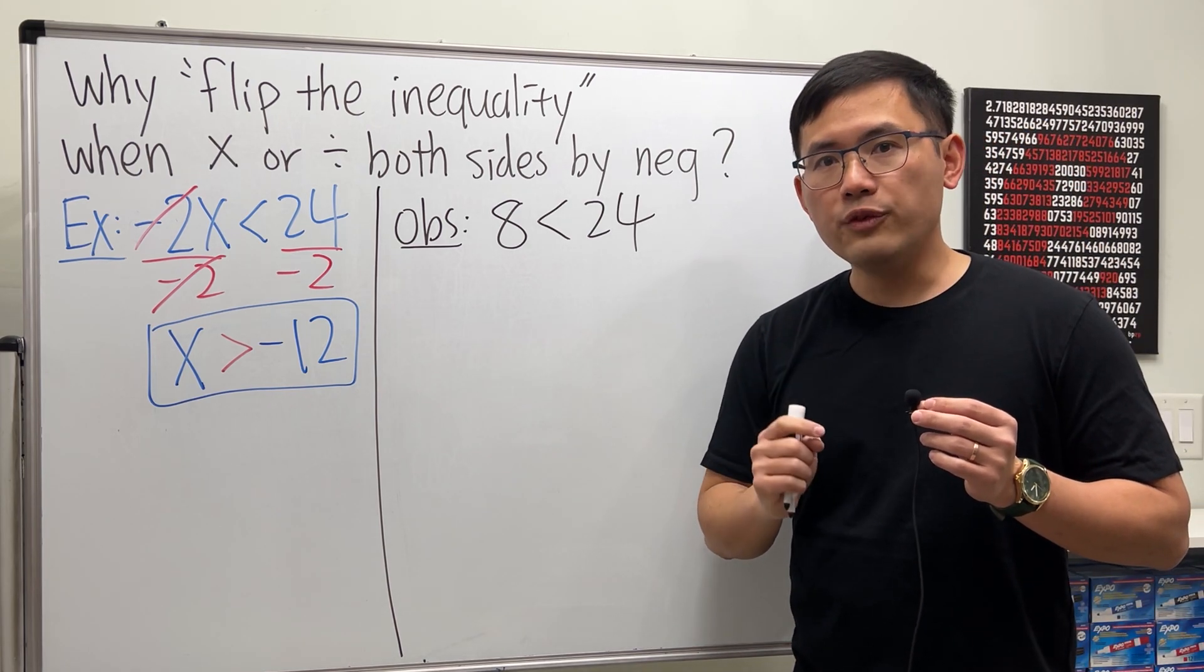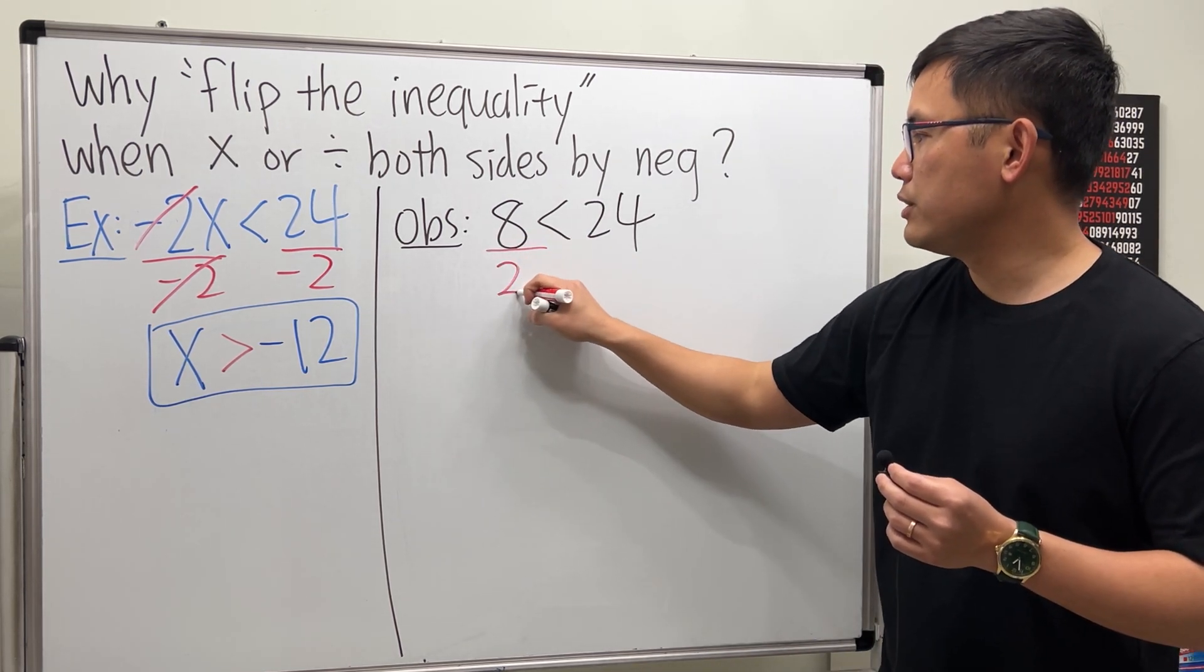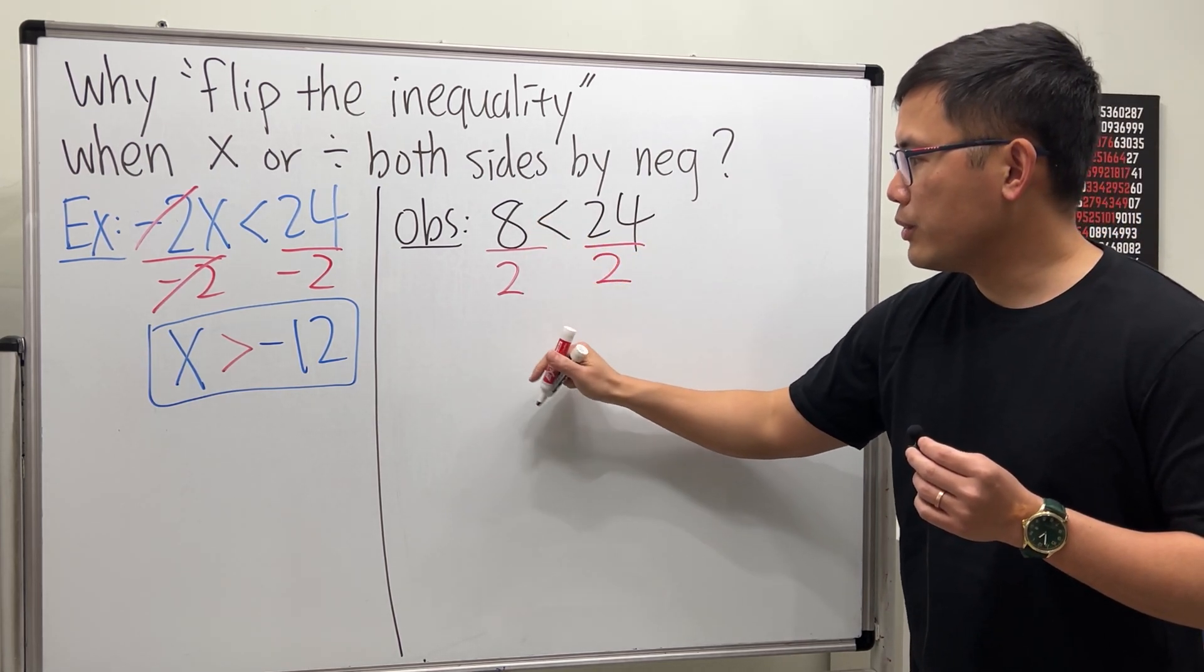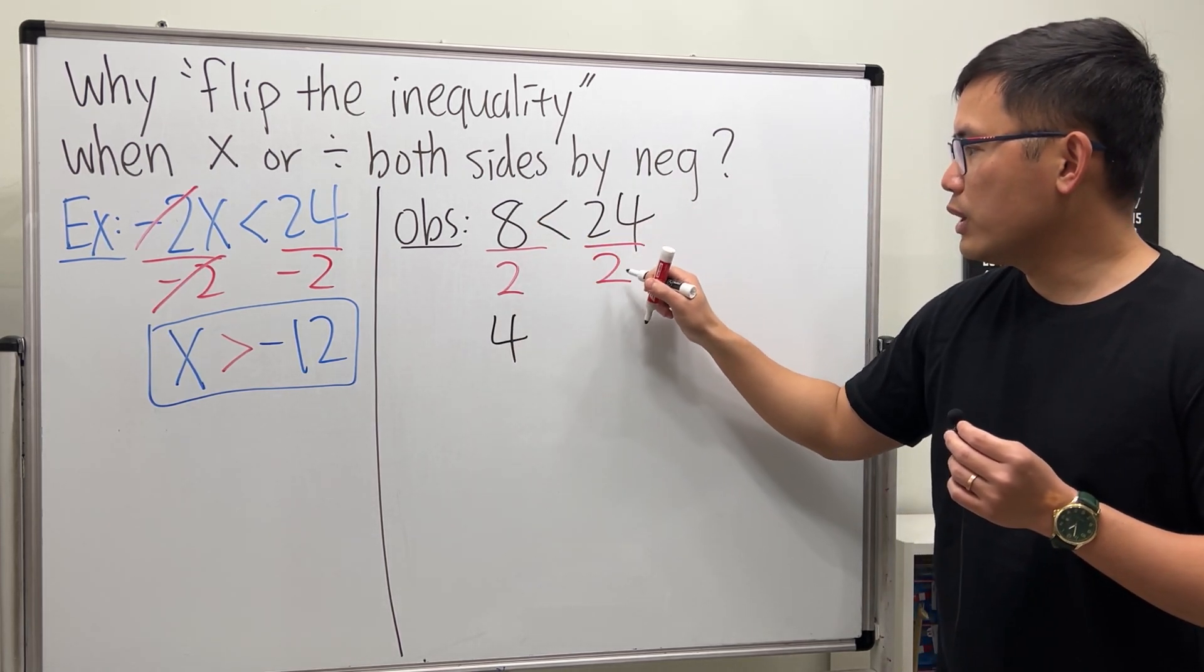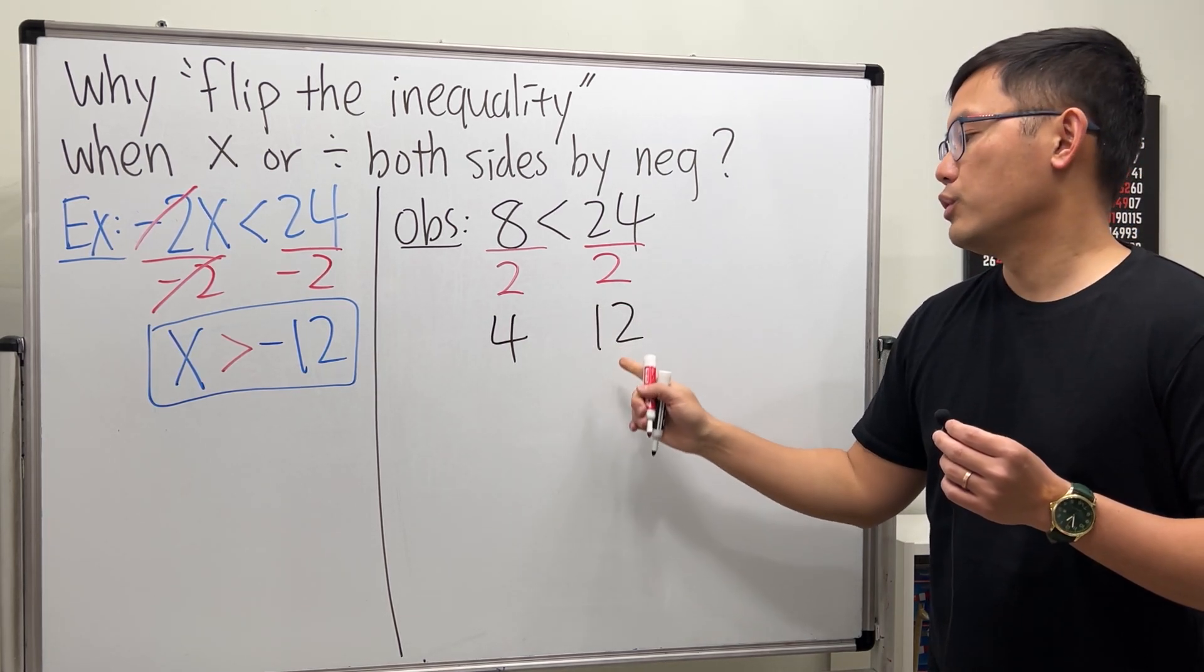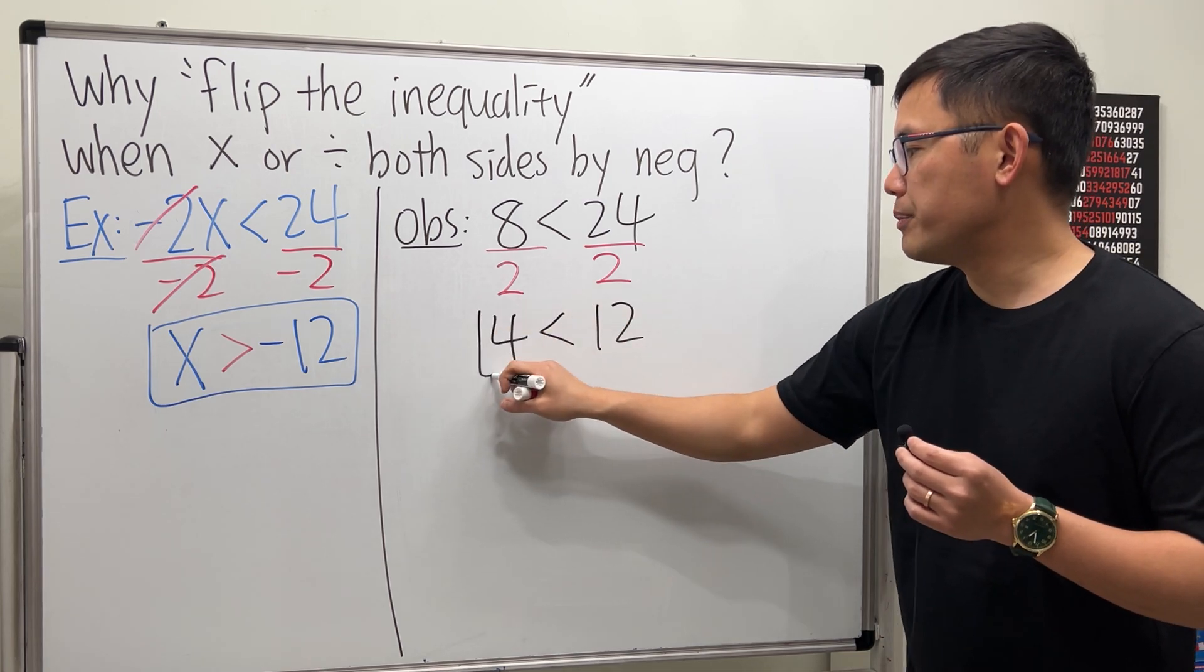Check this out. What if we divide both sides by just a positive 2? 8 divided by positive 2 is 4. 24 divided by 2 is 12. Which one's bigger? 12 is bigger. So as you can see, we do not have to flip the inequality symbol.